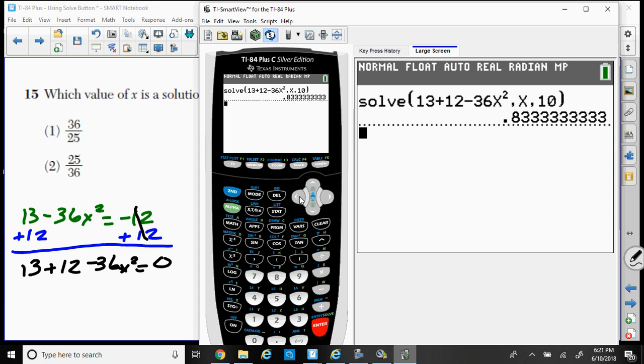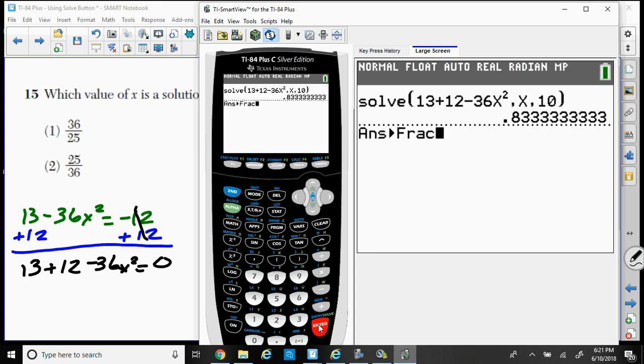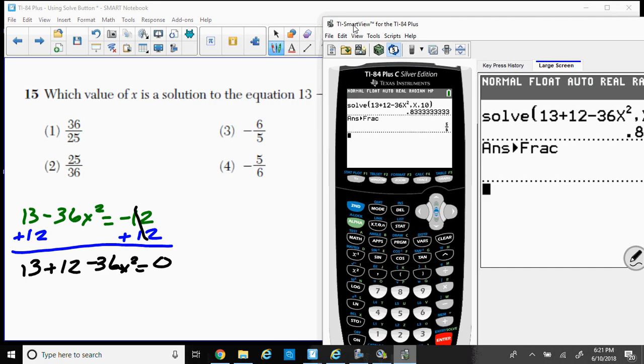So I have a decimal. Let's see if we can change that to a fraction. So by pressing math, number 1, we're going to take our answer and turn it into a fraction. And there it is, 5/6. Let's see if that choice is there. No, it's not there.